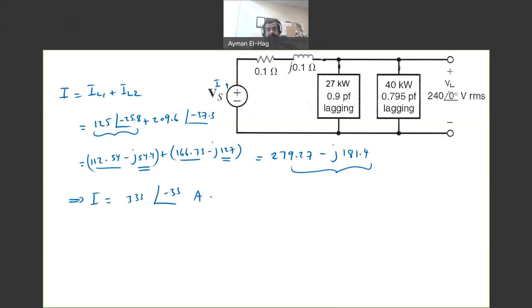Now, once we found the total current, then you want to find the power loss. Your power loss is equal to the I square times R, which is equal to 333 square times the 0.1, and this will give me approximately 11.1 kilowatt. So, this is your power loss between the supply and the load.